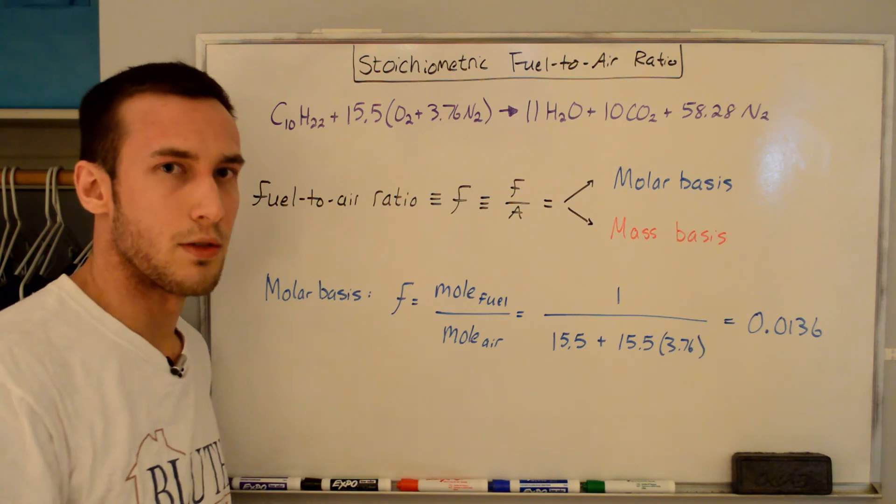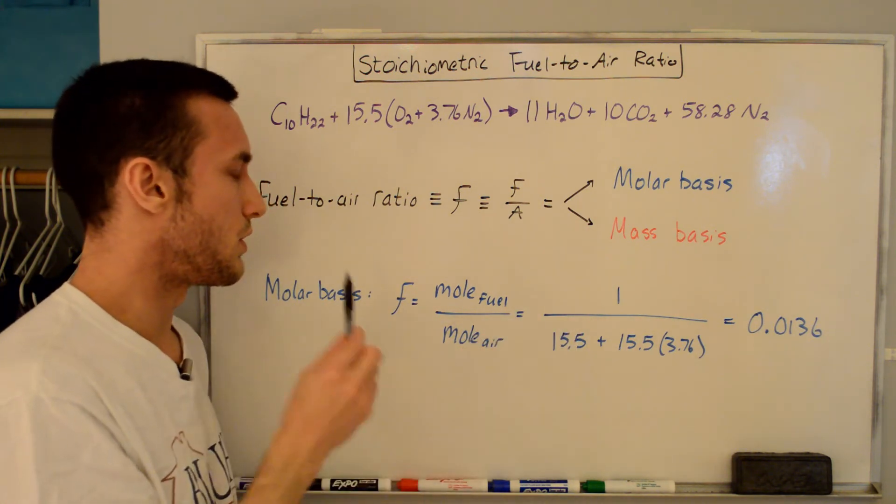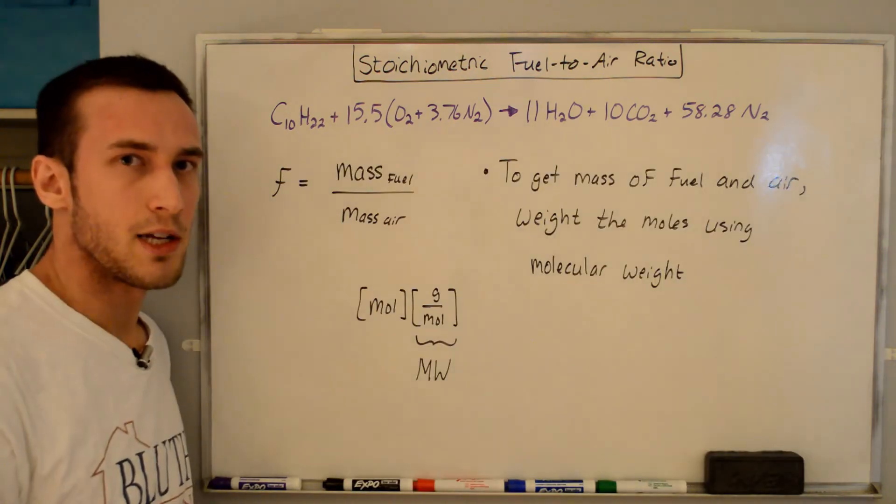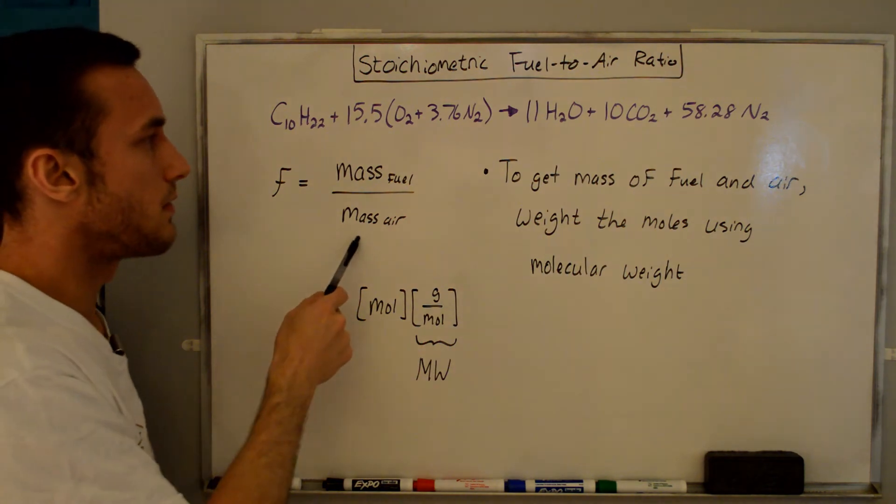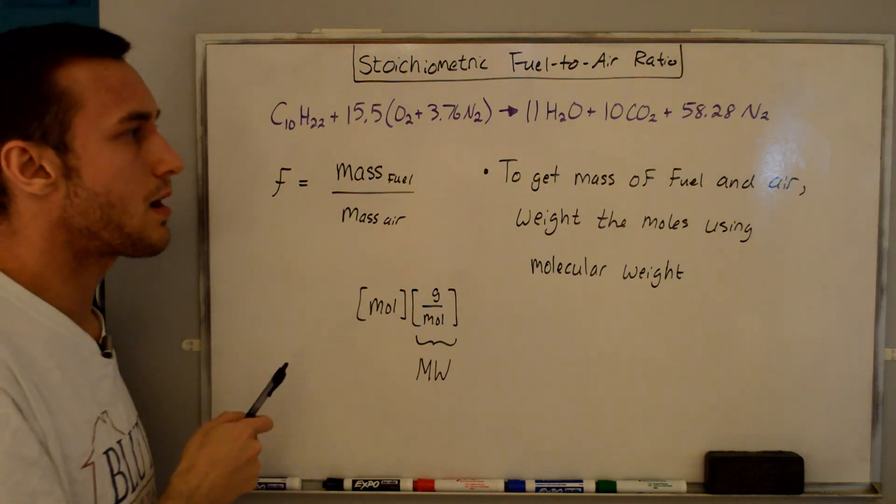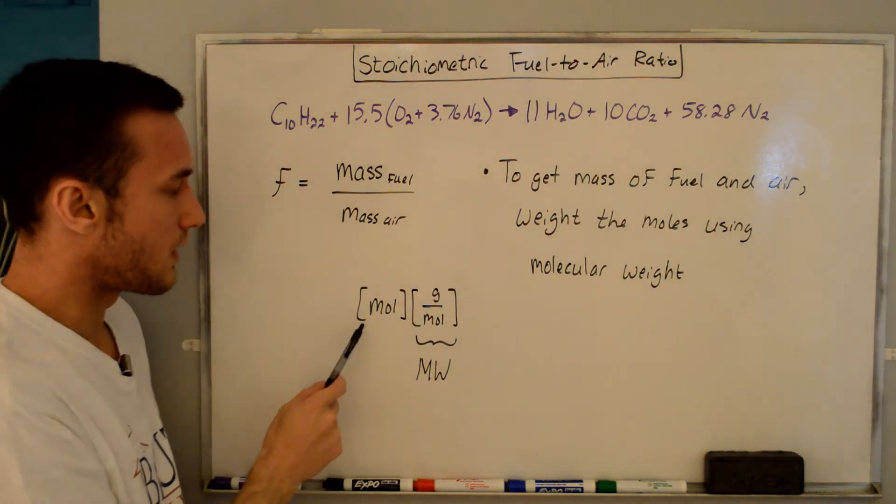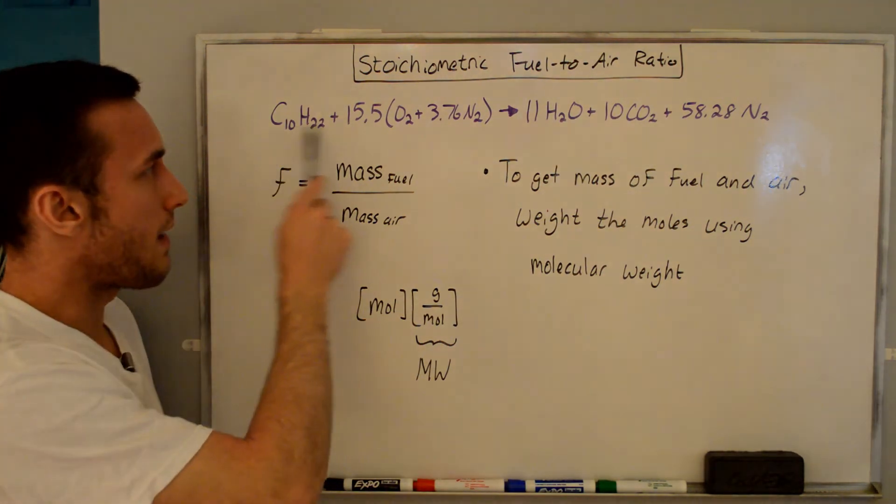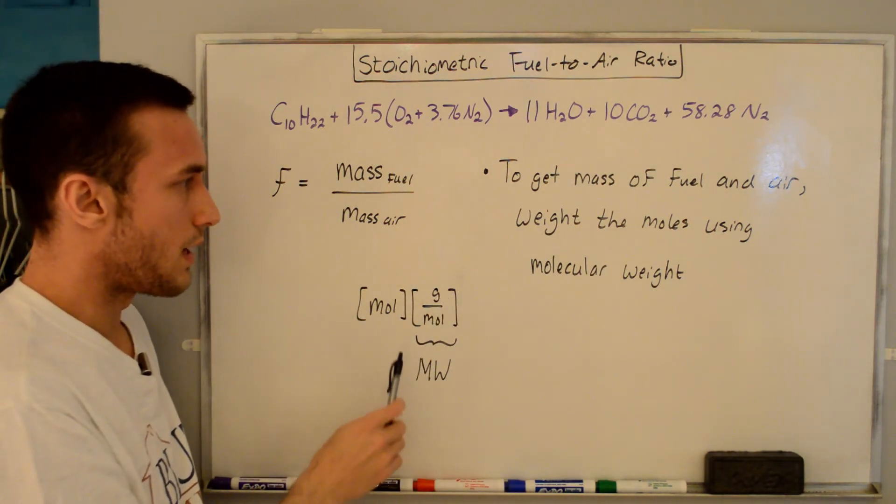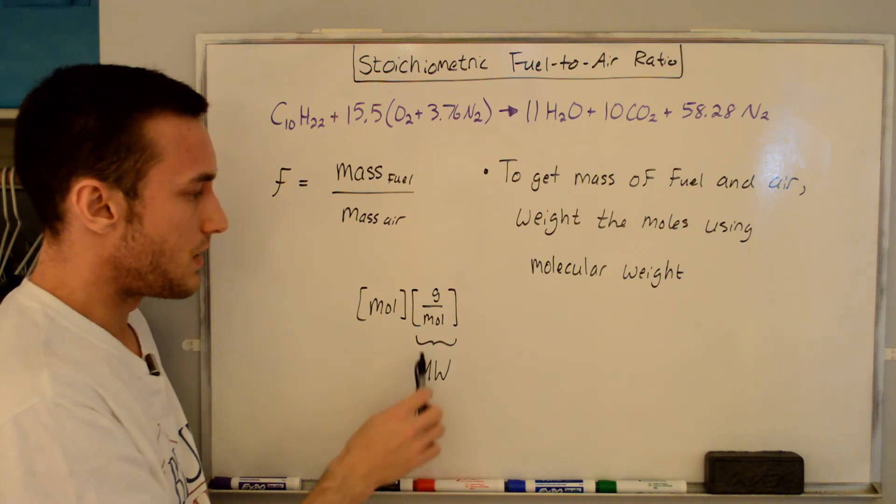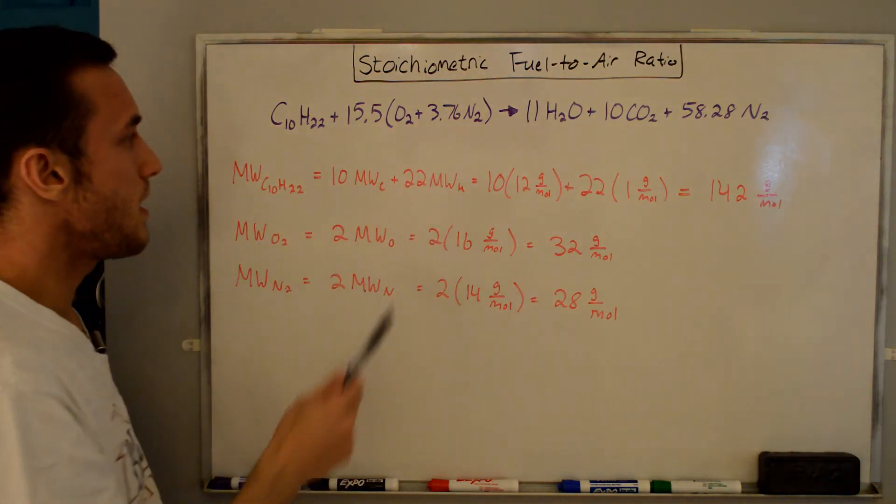However, for jet engine analysis and other types of analyses, depending on the problem, the mass basis is used. So if you use the molar basis fuel-to-air ratio, you'll get the wrong answer. So the mass basis fuel-to-air ratio is defined as F is equal to the mass of the fuel over the mass of the air. And to get the mass of the fuel in the air, we need to weight the number of moles in our equation here using the molecular weight. So we can say that the moles, that's what we have up here, times grams per mole, you can see that the moles cancel and get it in terms of grams, will give us this mass basis. And you can see that this here, this term is the molecular weight. So in order to weight these moles up here, we need to find the molecular weights.